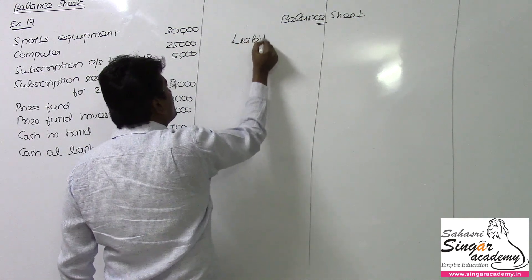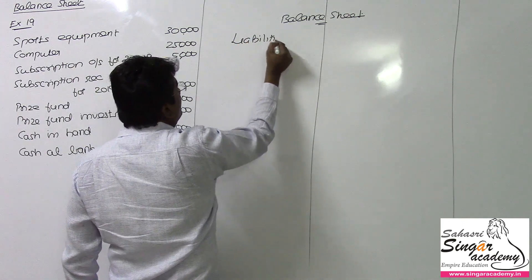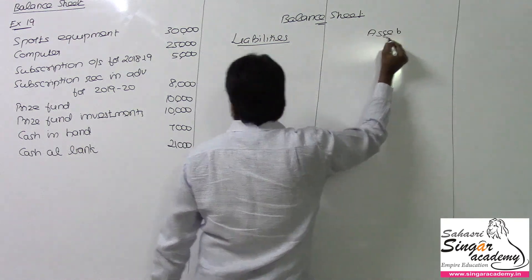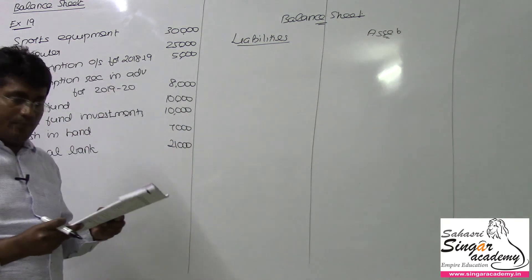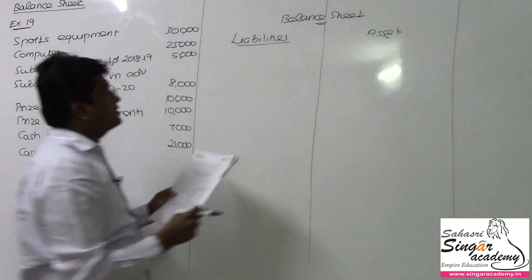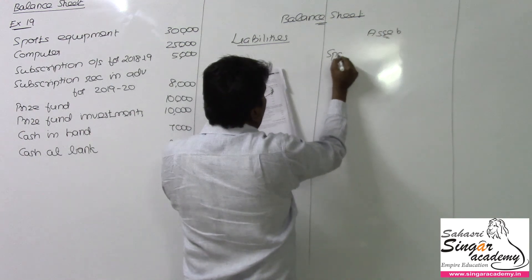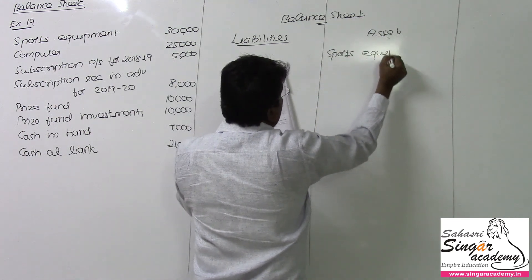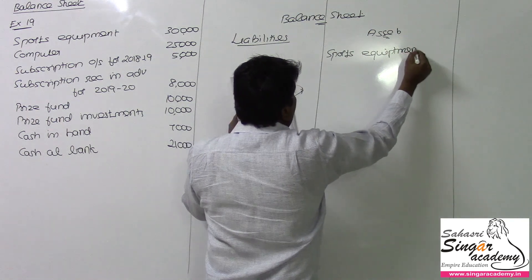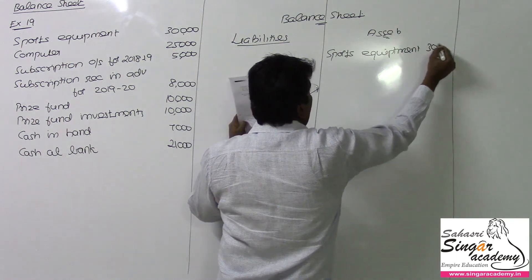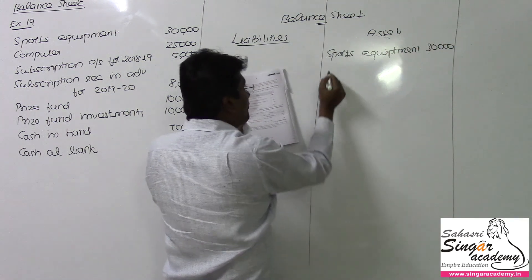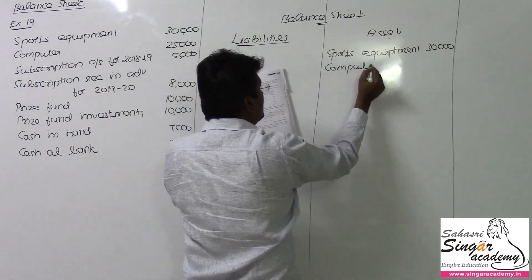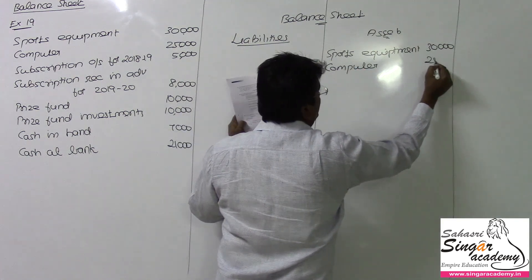Liabilities and assets. On the assets side: sports equipment is an asset with a value of 30,000 rupees. Computer is also an asset with a value of 25,000 rupees.